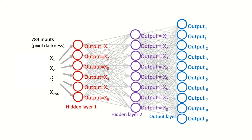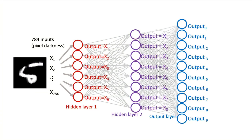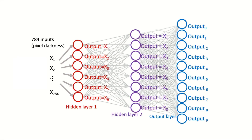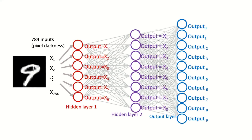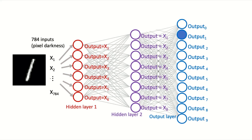If this network is presented with this image of a 5, we want the fifth neuron to output a probability of 1, and the rest of the neurons to output a probability of 0. If we show the network this image of a 9, again we want the ninth neuron to give a 1 and the rest a 0, and if we show the network a 1, we want this neuron to output a 1 and the rest to be 0, and so on.